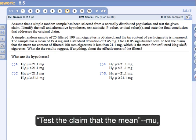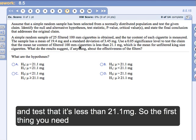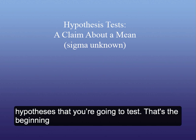And then we're going to test the claim that the mean mu is less than 21.1 mg. So the first thing you need to do in this kind of problem is set up the hypotheses that you're going to test. That's the beginning, that's the first thing we want to do here.